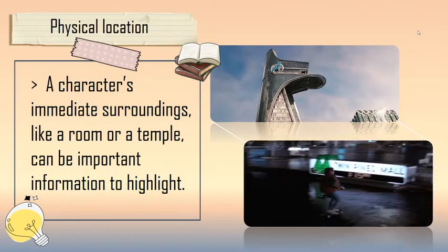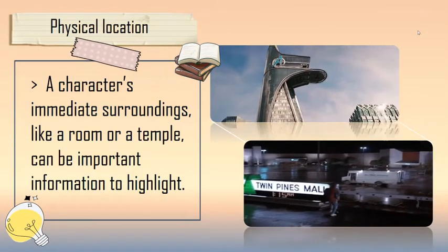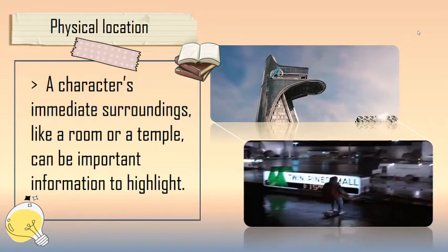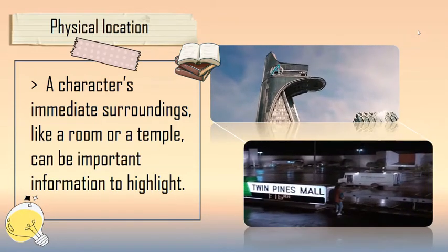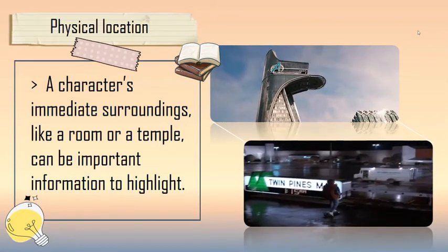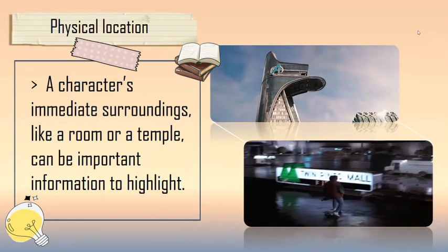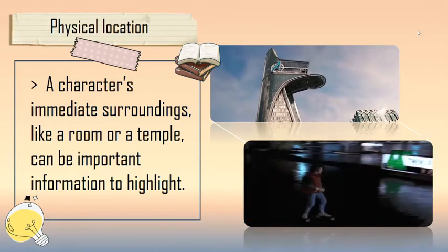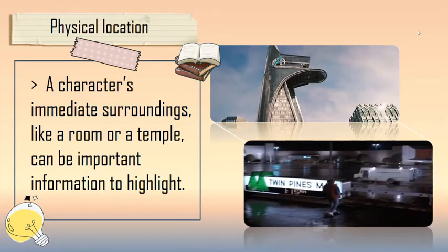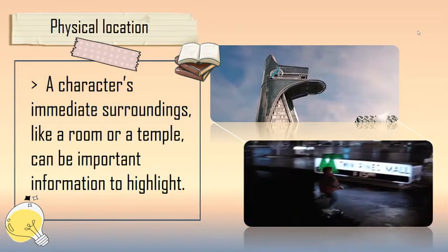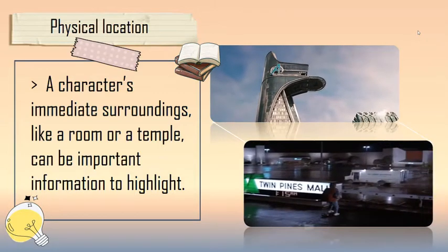The second element is physical location. A character's immediate surroundings, like a room or a temple, can be important information to highlight a narrative. An example is the Avengers Tower from the Avengers film created by Marvel, and the Twin Pines Mall from Back to the Future, where the time travel explanation begins.